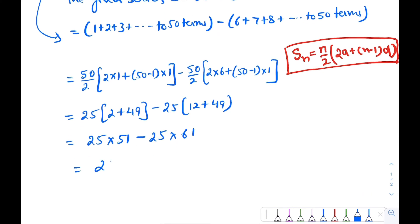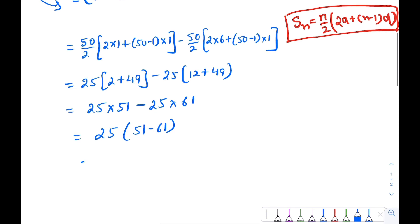So this is equal to 25(51 - 61) = 25(-10) = -250. So our answer is -250.